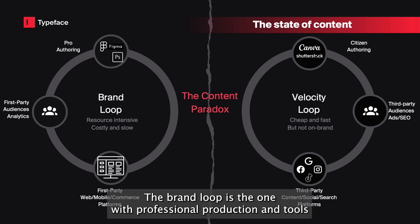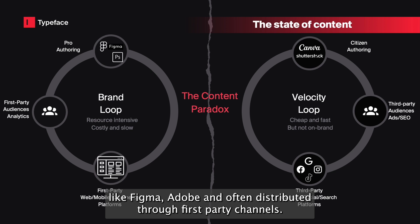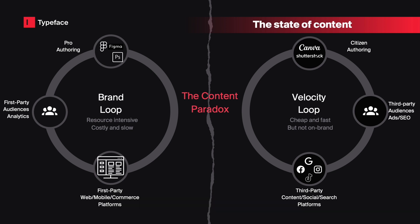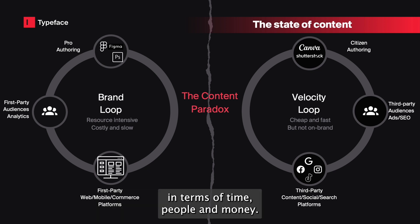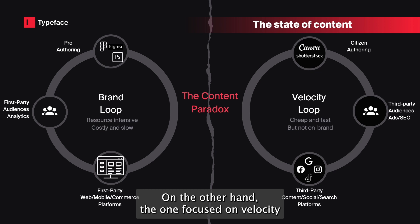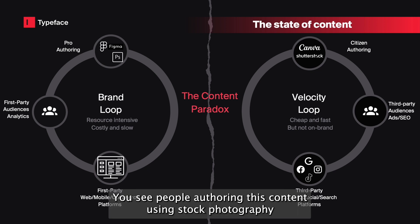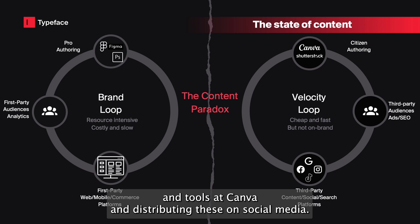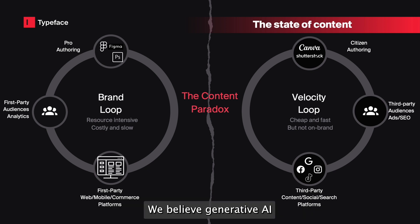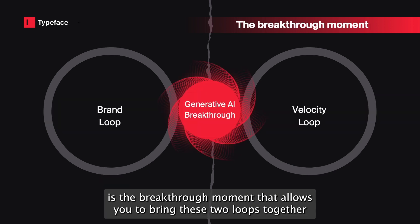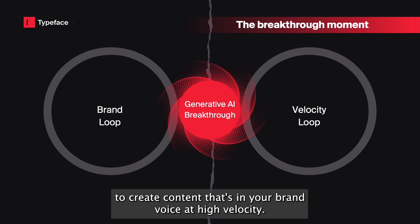The brand loop is the one with professional production in tools like Figma, Adobe, and often distributed through first-party channels. This shows your brand in the best possible light, but is resource intensive in terms of time, people, and money. On the other hand, the one focused on velocity is about getting content out quickly at high frequency. You see people using stock photography and tools like Canva and distributing these on social media. This doesn't necessarily reflect your products and brands in the best light. We believe generative AI is the breakthrough moment that allows you to bring these two loops together to create content that's in your brand voice at high velocity.